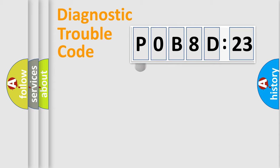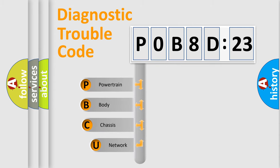Powertrain, Body, Chassis, Network. This distribution is defined in the first character code.